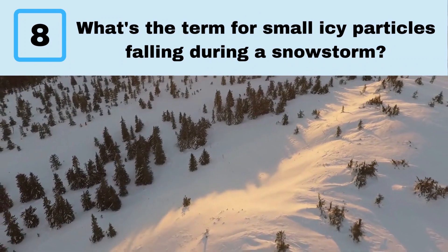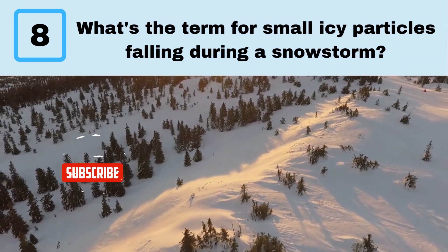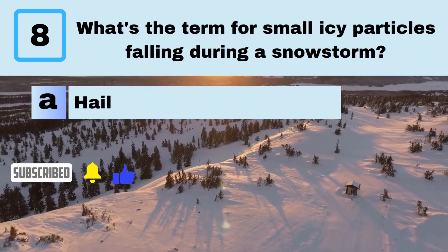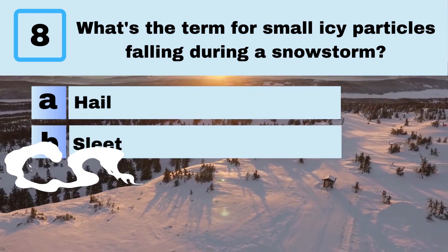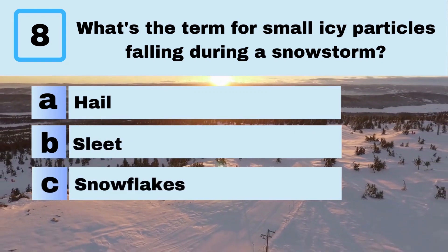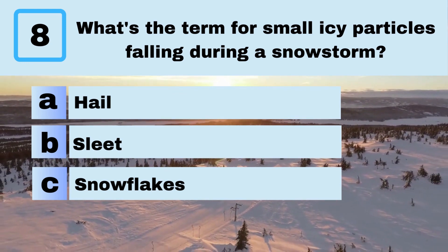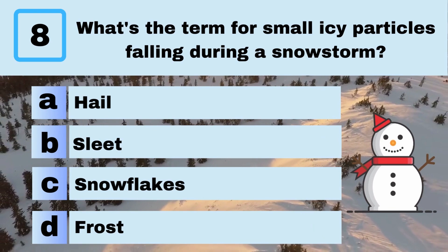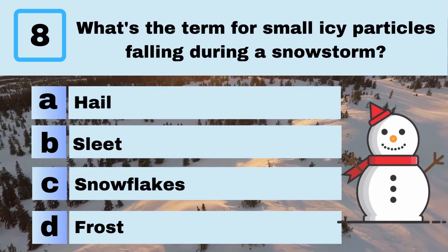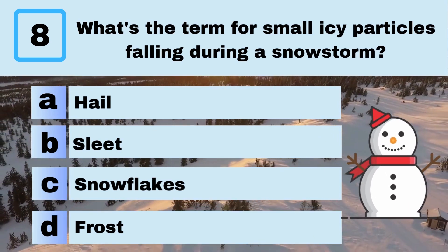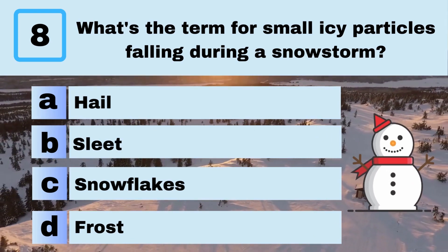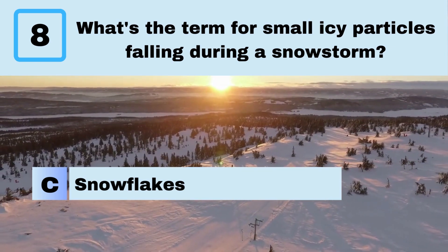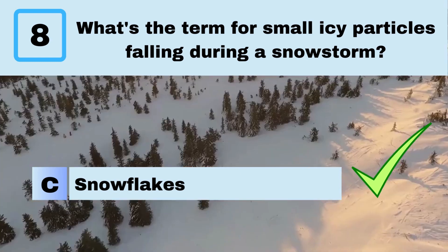Question 8. What's the term for small icy particles falling during a snowstorm? A. Hail. B. Sleet. C. Snowflakes. D. Frost. Answer: C. Snowflakes.